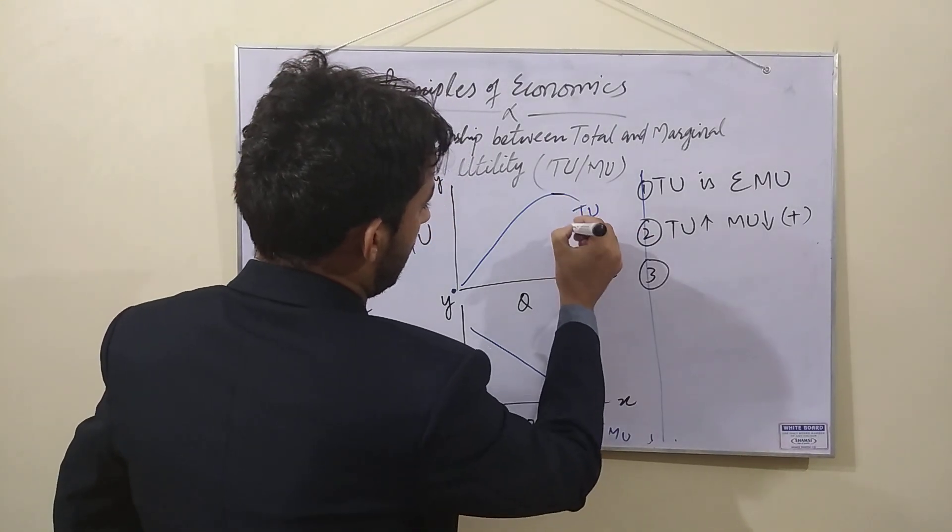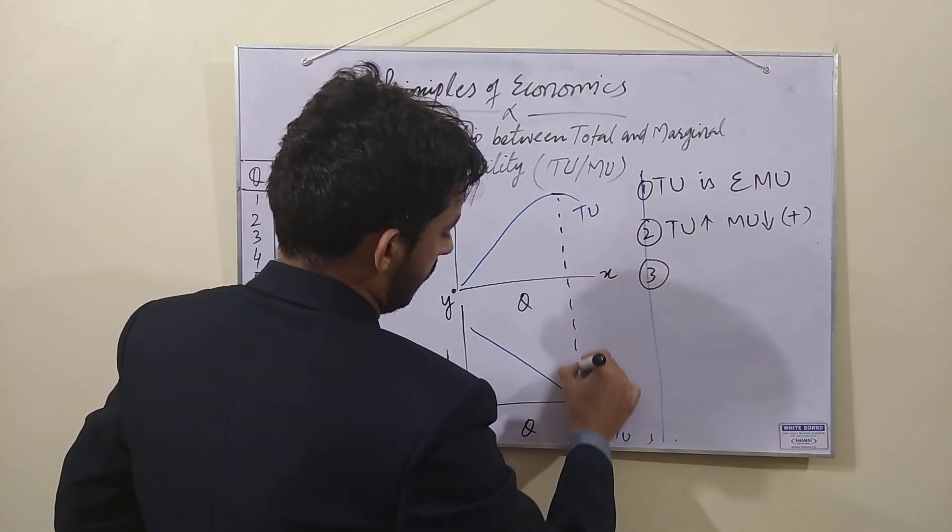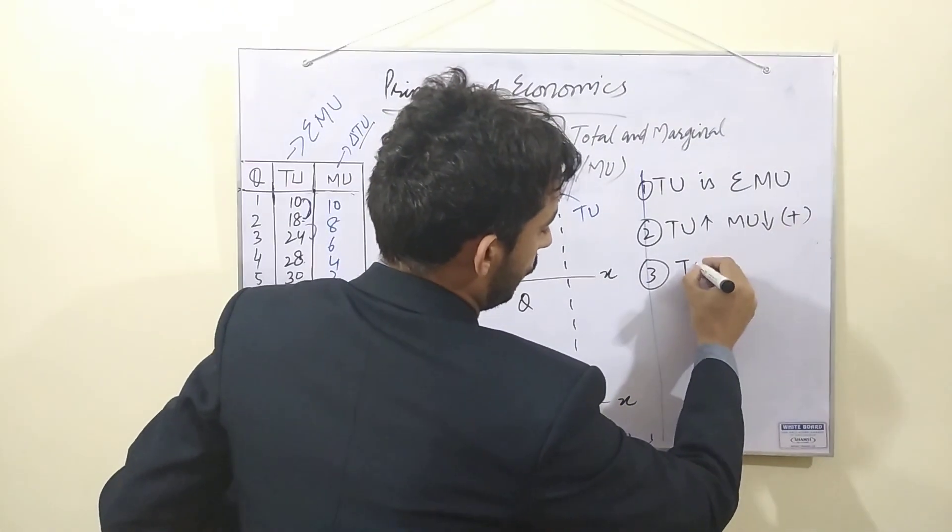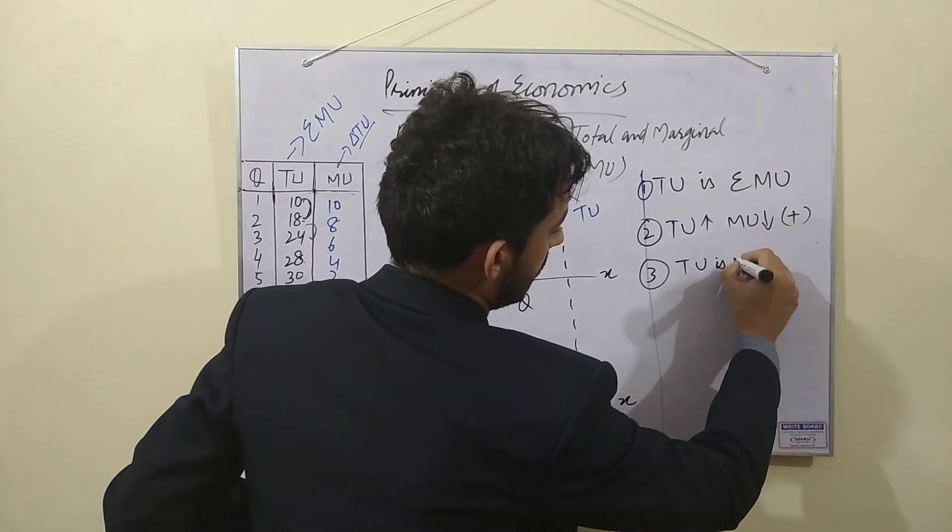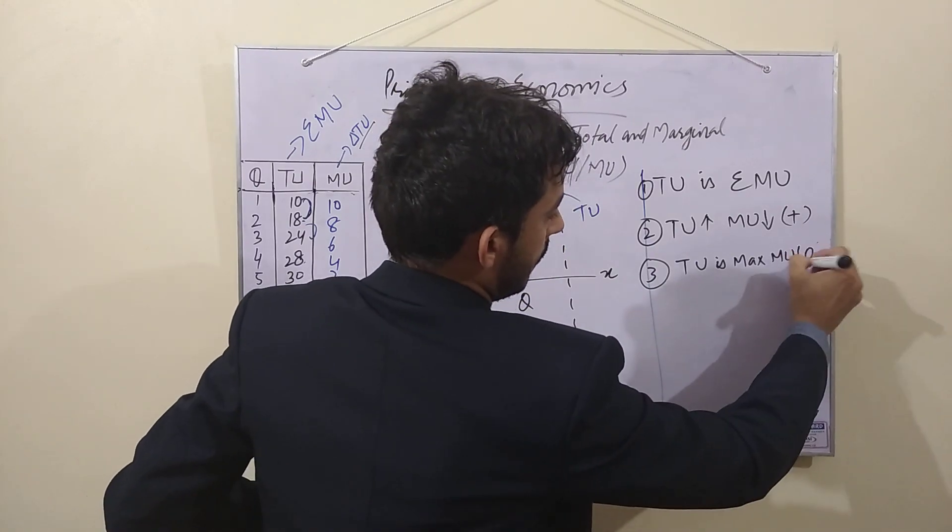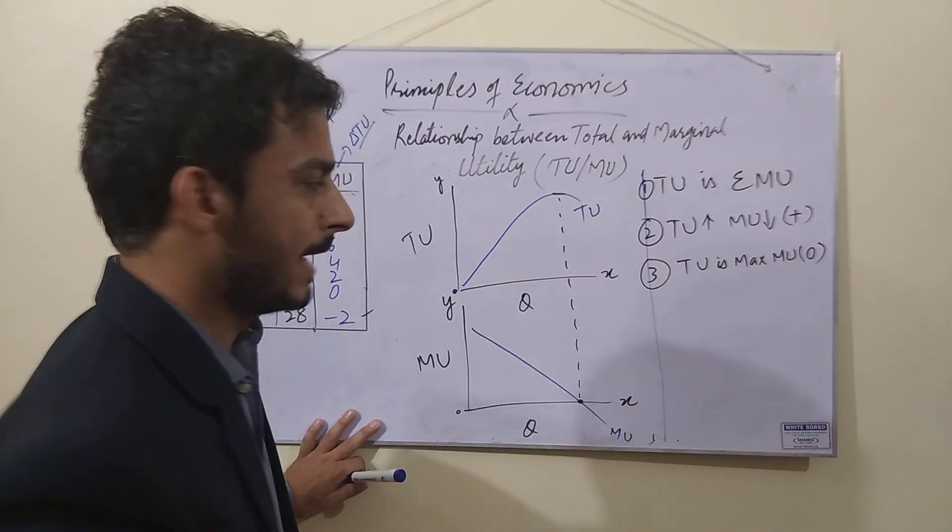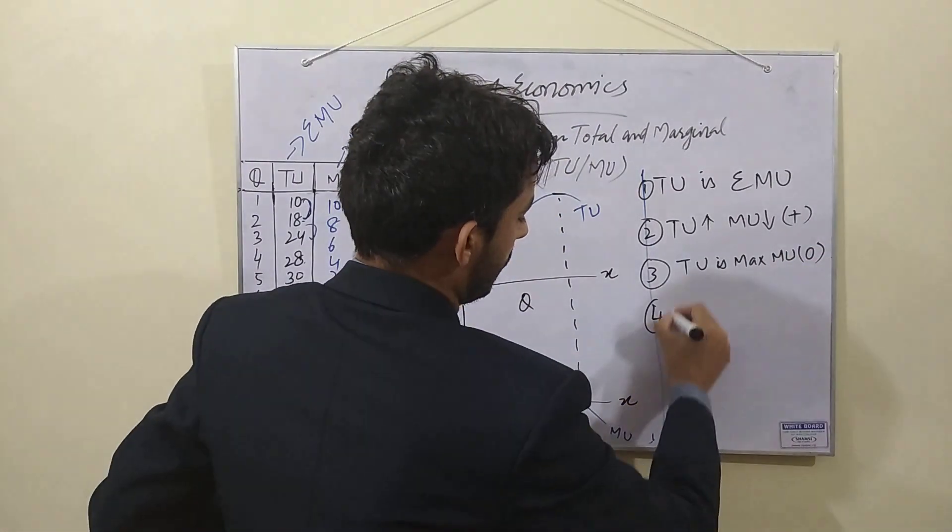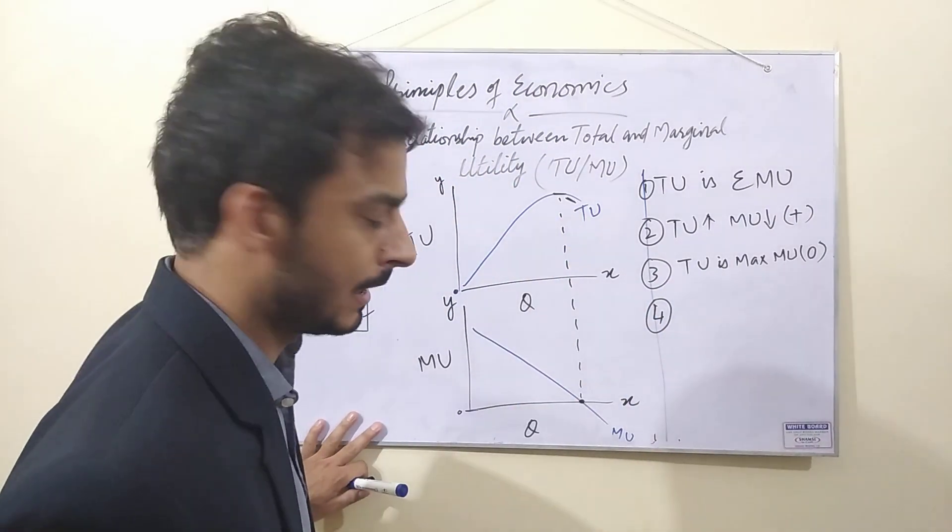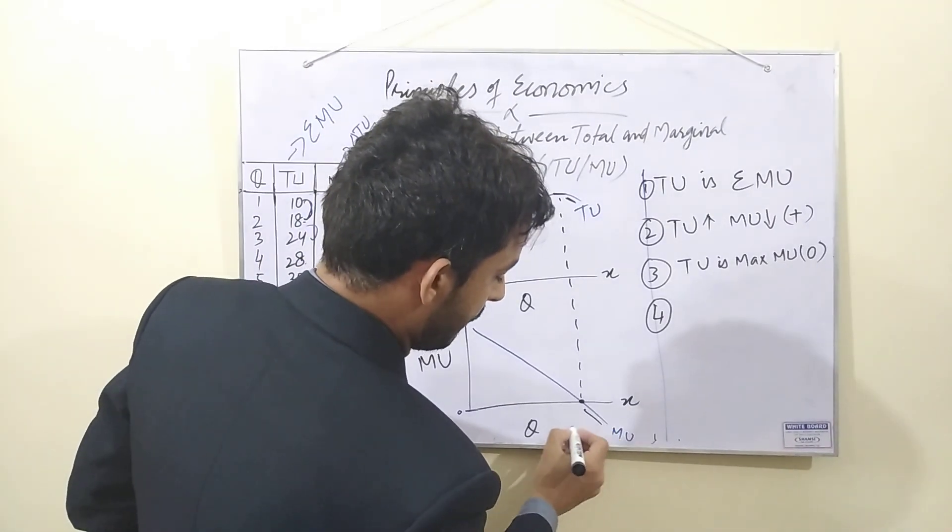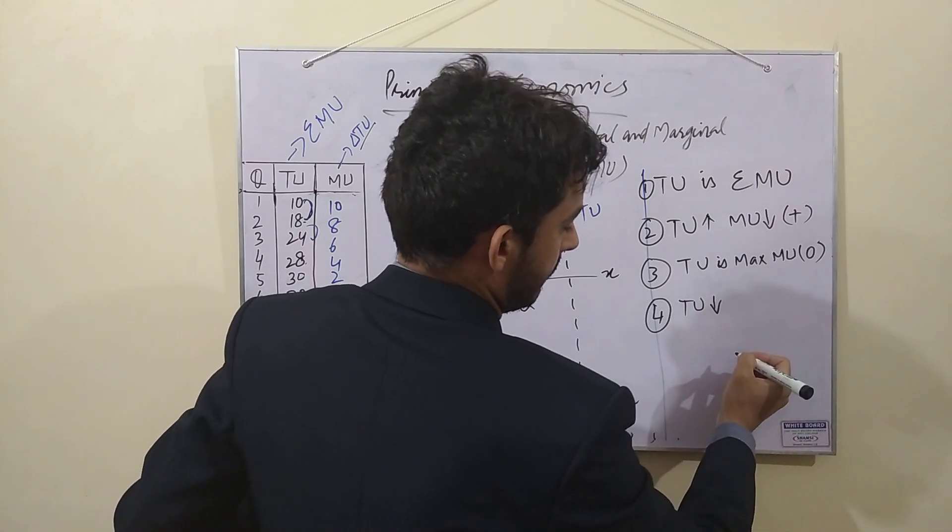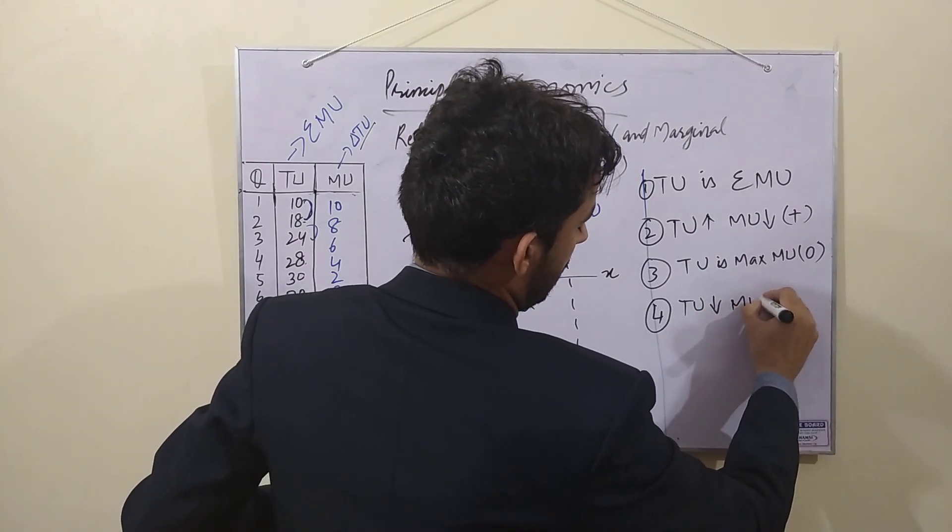Third relationship: when total utility is maximum, so marginal is zero. Marginal utility becomes negative.